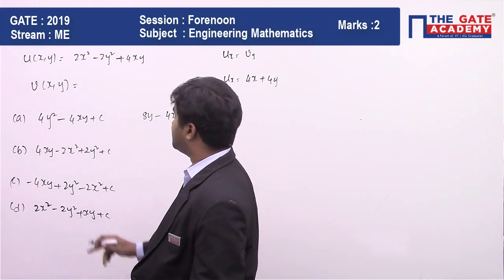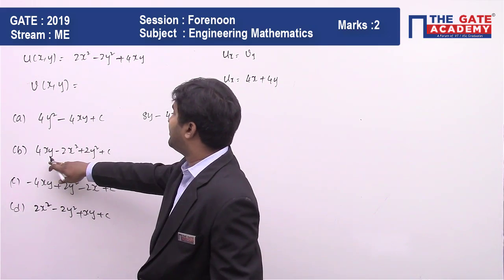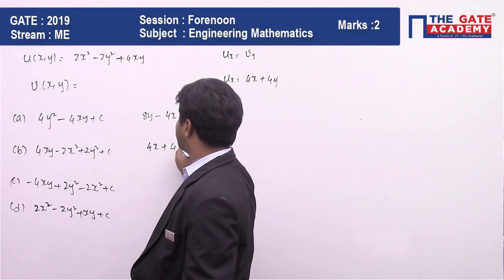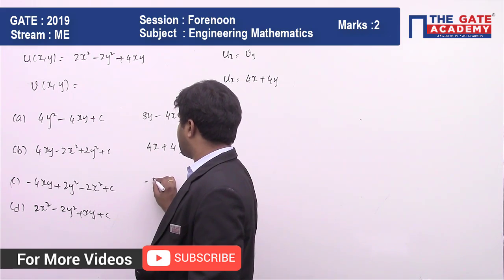The second option: if I derive with respect to y, it's going to be 4x + 4y. It is satisfying.